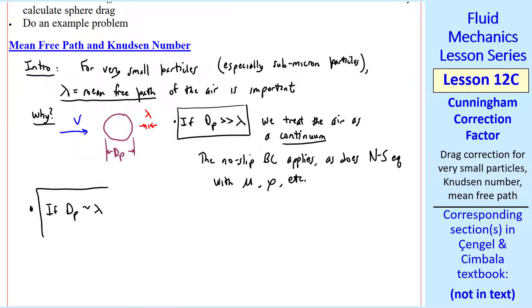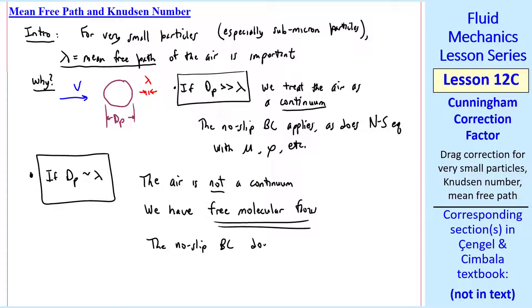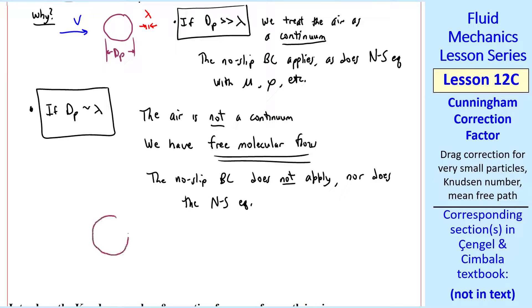But what happens if dp is of the same order of magnitude as lambda? Then the air is not a continuum. Instead, we have what's called free molecular flow. And the no-slip boundary condition does not apply, nor does the Navier-Stokes equation. I'll sketch this case here.